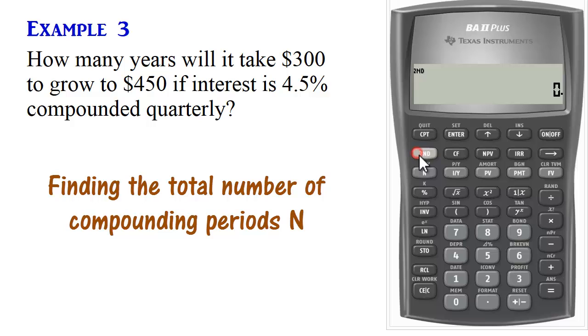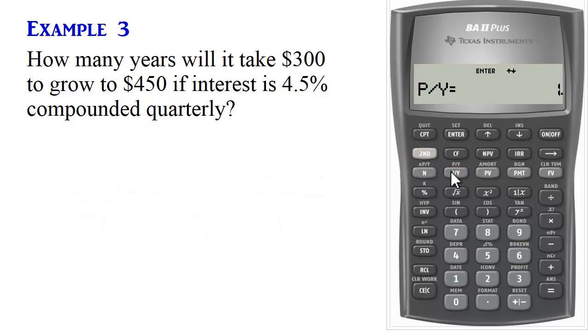So again, we start by setting P/Y, second P/Y. It's compounded quarterly, so we set P/Y to 4. Enter. Scroll down and show that C/Y is also set to 4.